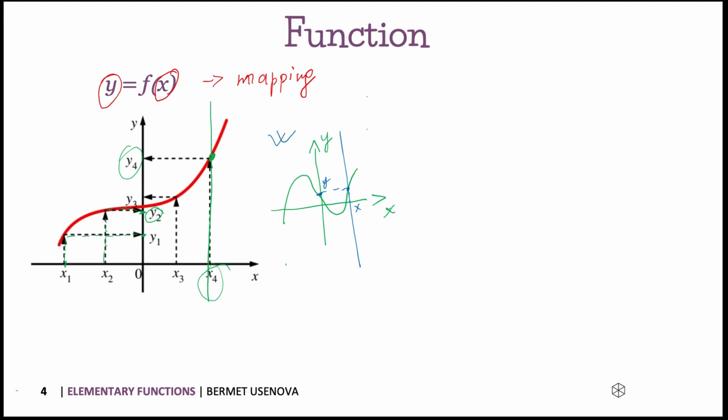If we have something a bit different, for example we have a circle, and then we want to know whether this is a function or not, we draw a vertical line and we get two points here. And it means that it's not a function.